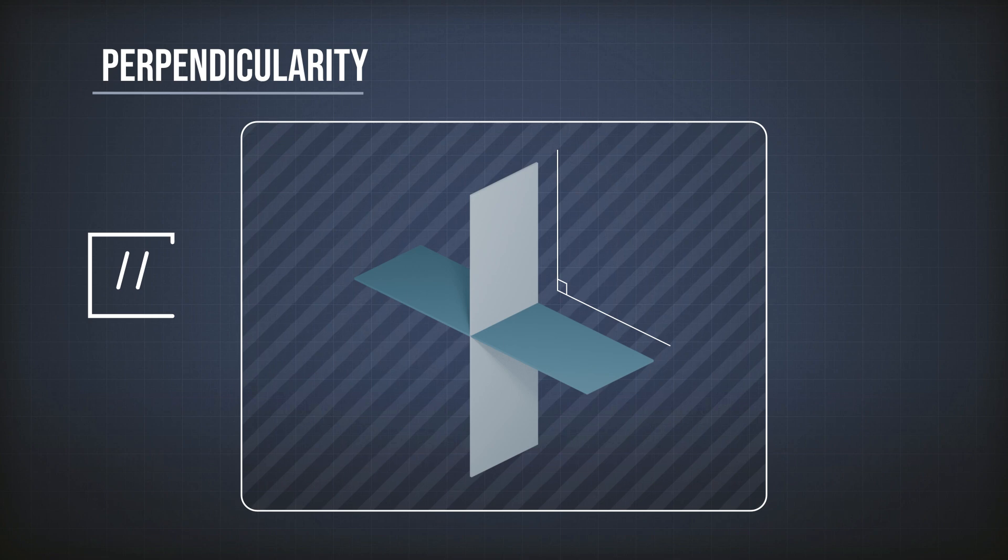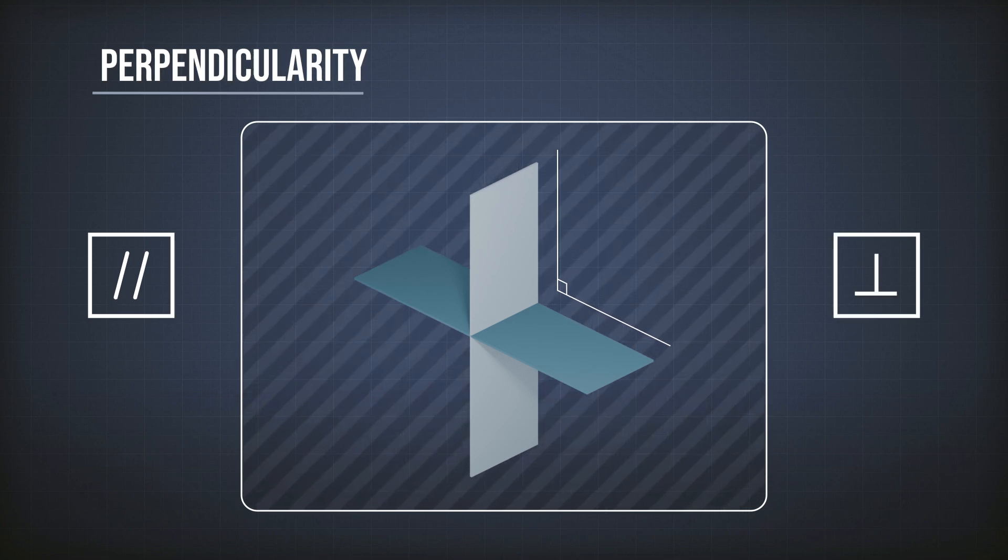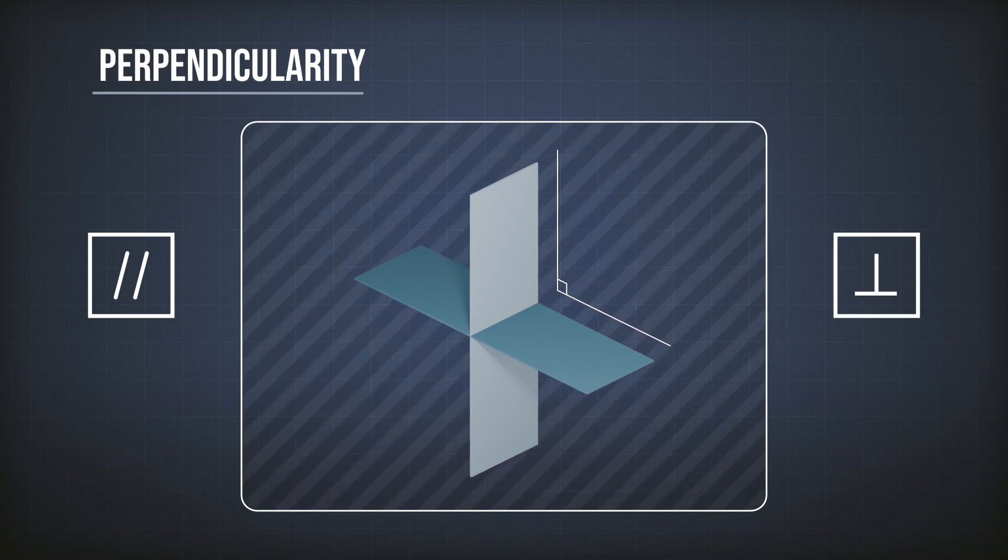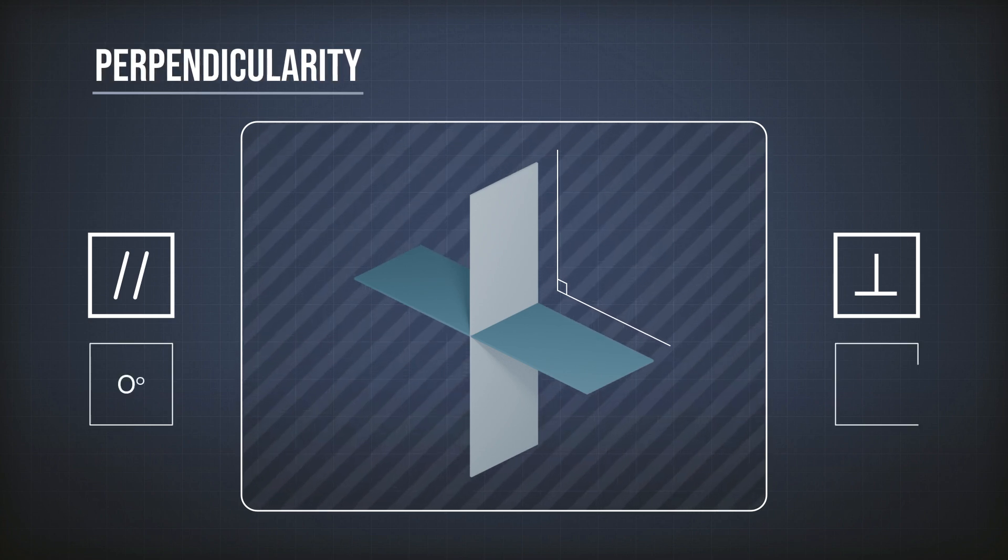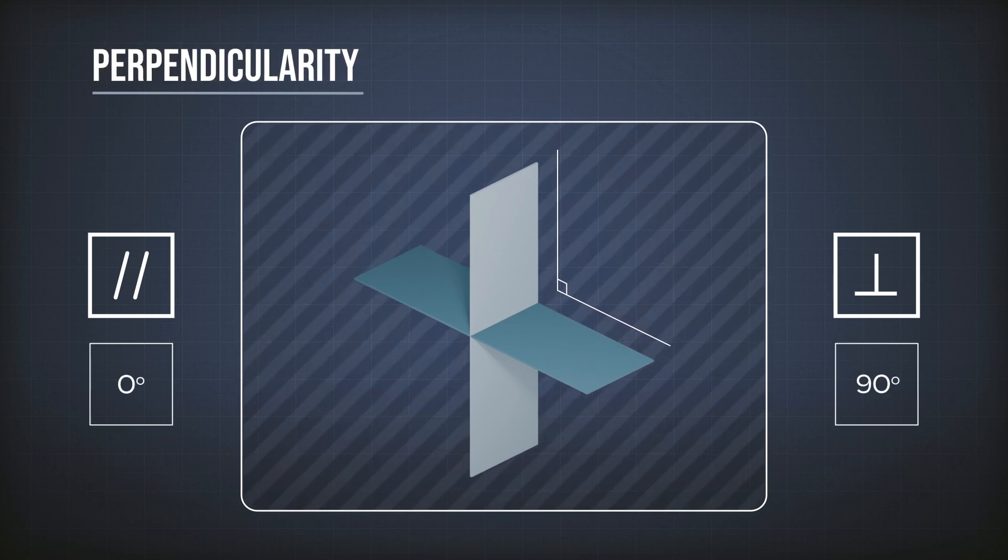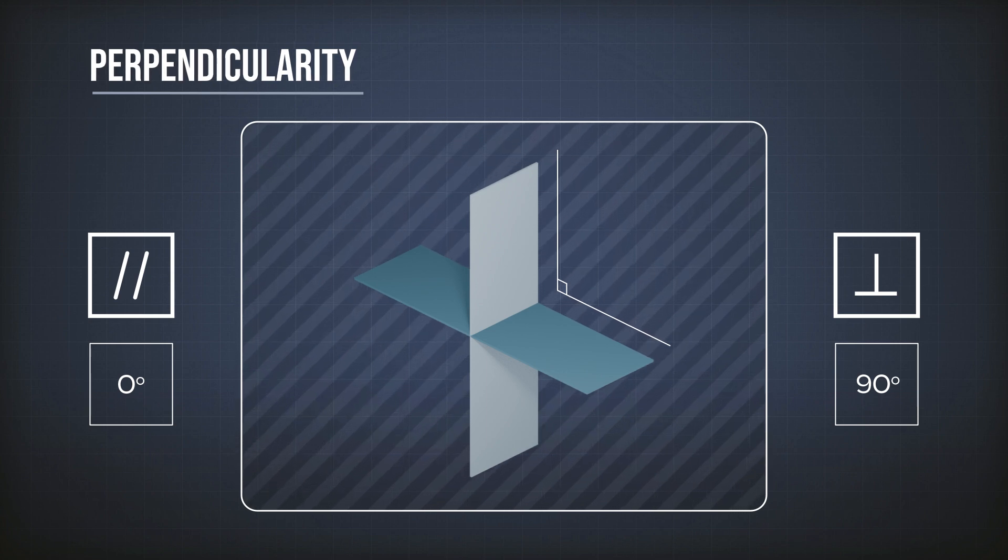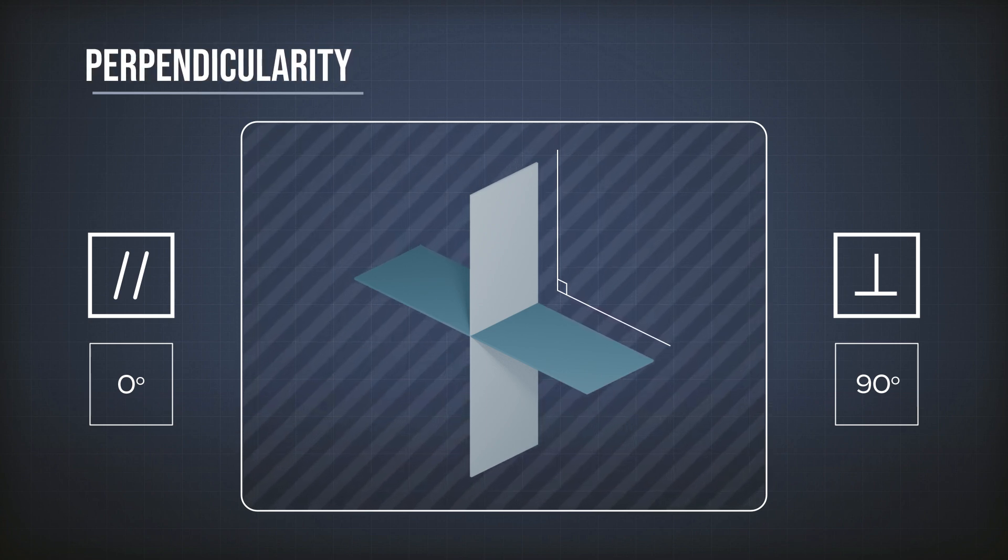Difference between parallelism and perpendicularity is the value of the angle. The value for parallelism was 0 degrees, and here it's 90 degrees. Everything else is the same between the two tolerances, which means for the perpendicularity I need to first define my datum.